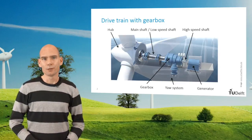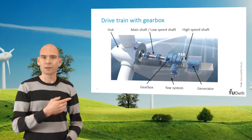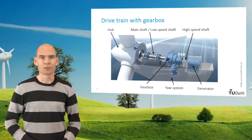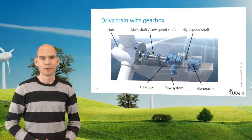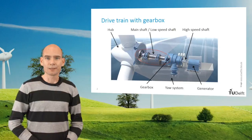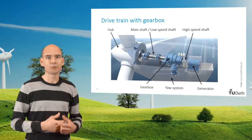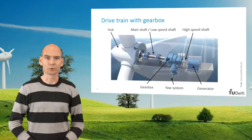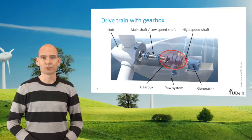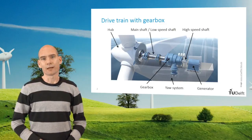If we open up the nacelle, we can see the drivetrain. The drivetrain is the assembly of all rotating components that are involved in the energy conversion. What you see here is traditionally the most common type of drivetrain: the drivetrain with a gearbox. On the left-hand side you see the hub that is connected to a low-speed shaft. The generator used in this drivetrain is a more or less off-the-shelf product and needs to rotate at a much higher speed than the rotor. Therefore, it is connected to the low-speed shaft through a gearbox. For multi-megawatt turbines, the gearbox increases the rotational speed by a factor of about 100.